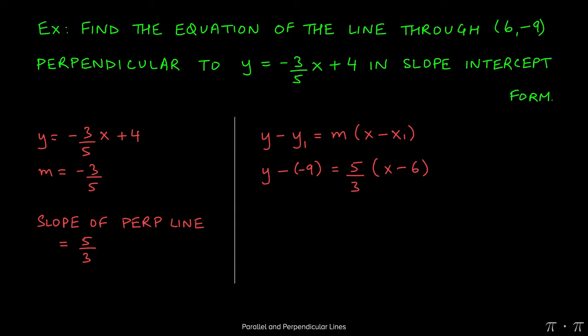A negative times a negative will make a positive, so we get y + 9 = 5/3(x - 6).